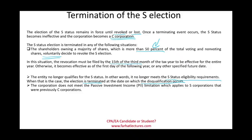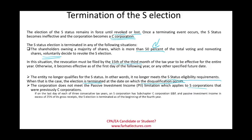Another termination trigger is failing the passive investment income limitation. If a corporation has passive investment income — such as dividends, royalties, or interest — exceeding 25% of gross receipts for three consecutive years, on the fourth year the S corporation loses its status.